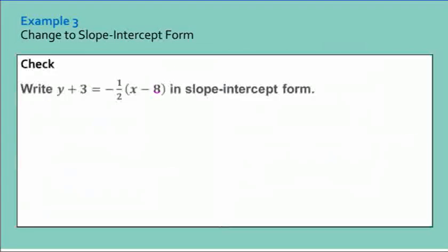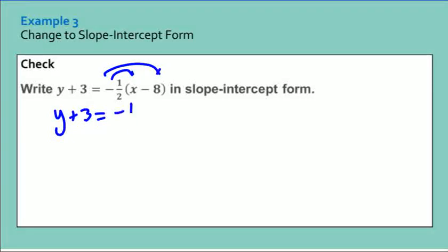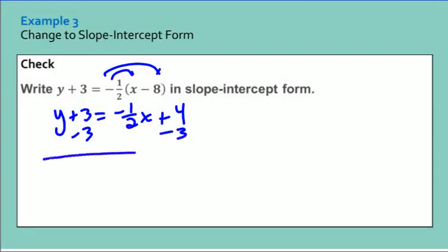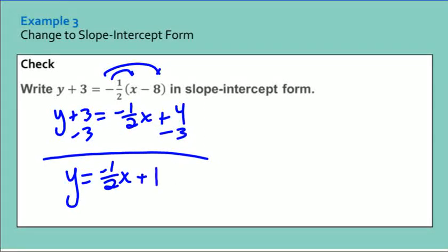For the next example in slope-intercept form, distributing negative one half gives Y plus 3 equals negative one half X plus 4. Subtracting 3 from both sides gives the equation Y equals negative one half X plus 1.